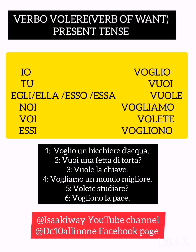Number one: 'voglio un bicchiere d'acqua', which is 'I want a cup of water'. Note: 'voglio un bicchiere d'acqua' — not 'vuoi'. If you say 'voglio' it means you are talking about yourself; 'vuoi' means you are talking to the next person.